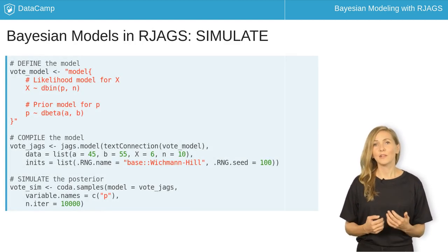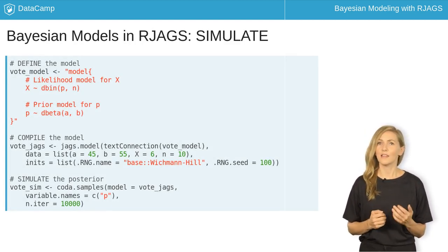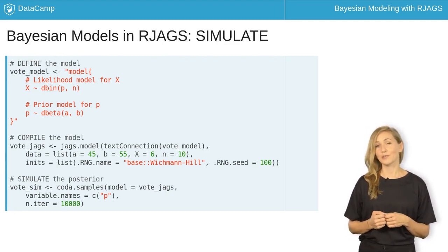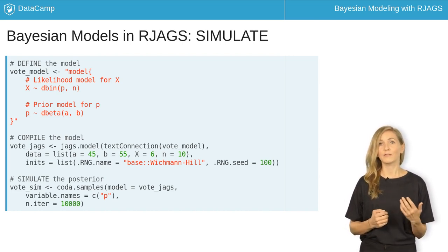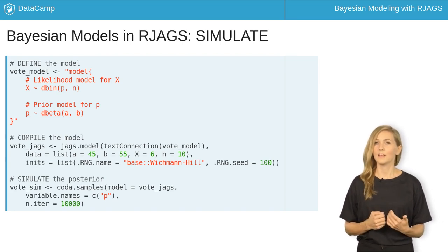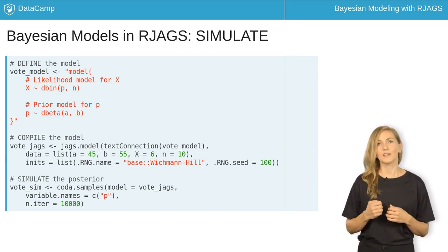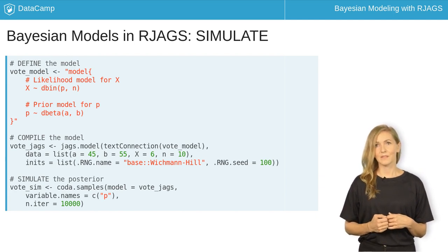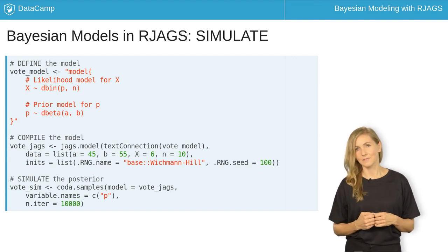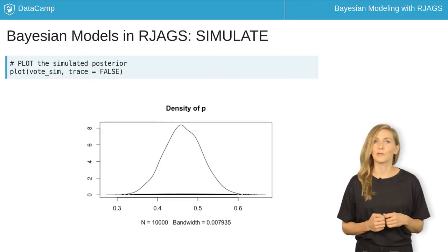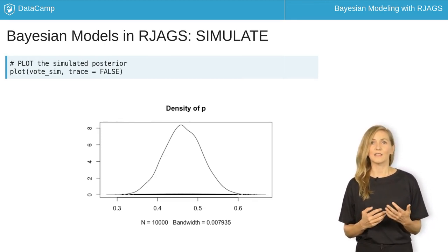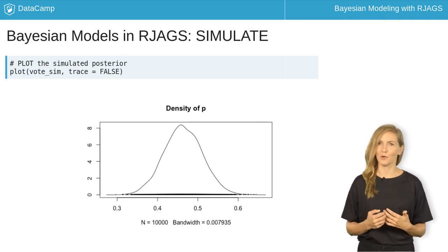Finally, we simulate the posterior using CodaSamples to draw 10,000 approximate samples from the posterior. CodaSamples takes three arguments: model (your compiled vote JAGS model), variable.names (here your parameter of interest P), and niter (your desired sample size or number of iterations). The results, stored in VoteSim, are an mcmc.list object. We can take a quick peek at the distribution of the resulting 10,000 CodaSamples using the plot function. Importantly, this approximates the posterior model of your election support P.